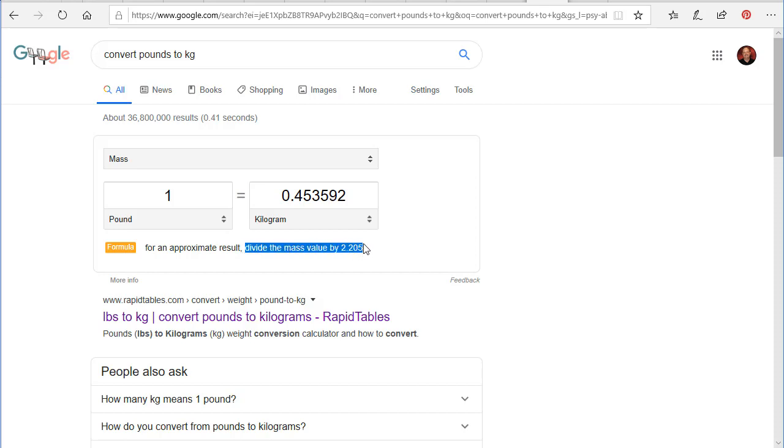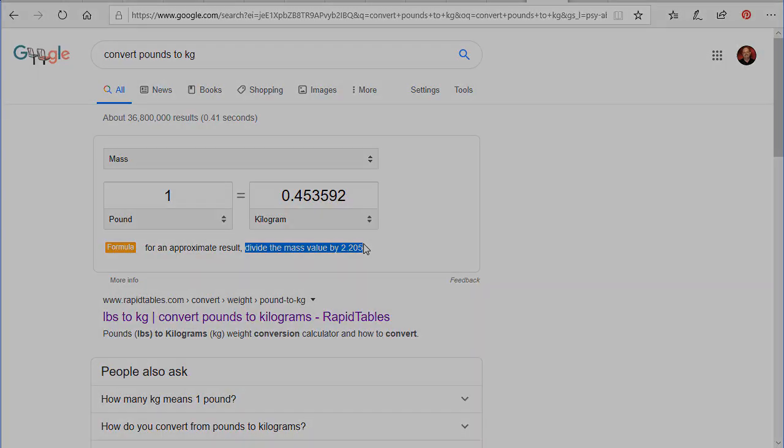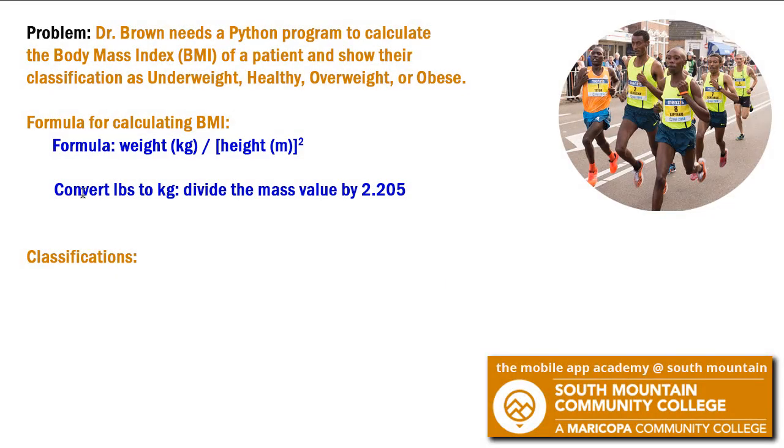So I'm going to copy that and go back to my notes. So I put a note here that to convert pounds to kilograms, I'm going to divide the mass by 2.205. Now I need to convert inches, our height measurement, into meters.